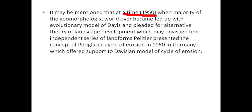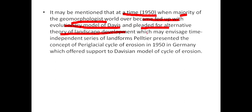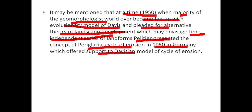Around 1950, the majority of geomorphologists worldwide became dissatisfied with the evolutionary model of Davis and sought alternative theories of landscape development that could envisage time-independent series of landforms. Peltier presented the concept of the periglacial cycle of erosion in 1950, which offered some support to Davis's model cycle of erosion.